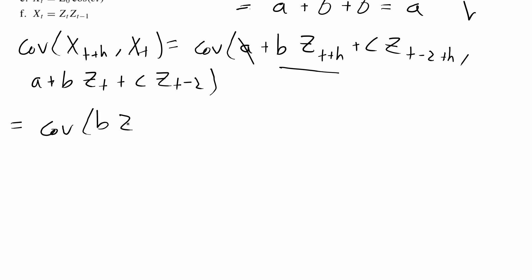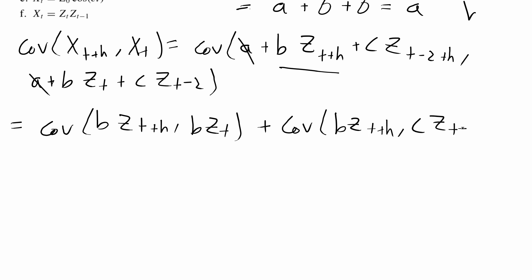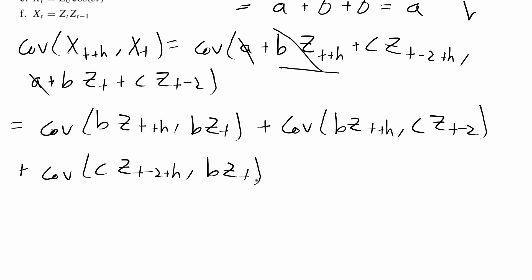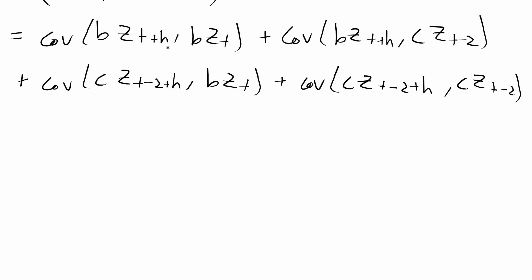The covariance between b*z_{t+h} and b*z_t, and the covariance between b*z_{t+h} and c*z_{t-2} are expanded out. Similarly, the covariance between the third part c*z_{t-2+h} and the constant a is zero, and the remaining terms with b*z_t and c*z_{t-2} are also expanded using covariance properties.